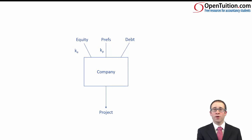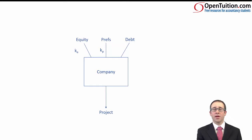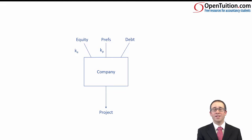We also look at the debt holders. The debt holders will require an interest payment to be made to them every single year. In some situations, the debt will also need to be redeemed, so they will require a return for the interest and also a return on maybe the growth on that debt instrument. That return is a cost to the company and that cost is referred to as the cost of debt, KD.